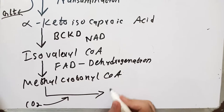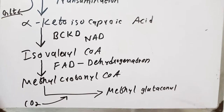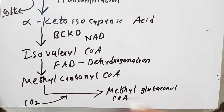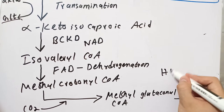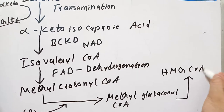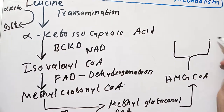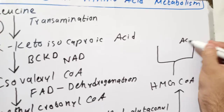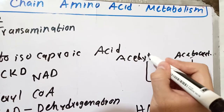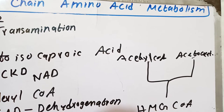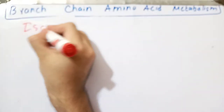The addition of carbon dioxide leads to the formation of methyl-glutaconyl-CoA. The methyl-glutaconyl-CoA will be converted into hydroxymethylglutaryl-CoA, or HMG-CoA. This HMG-CoA will break down into two compounds: ultimately acetoacetate and acetyl-CoA.